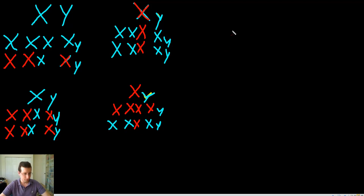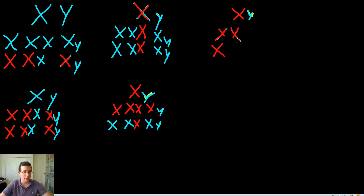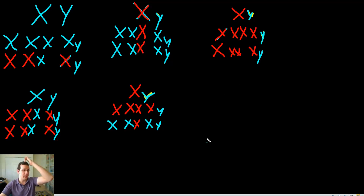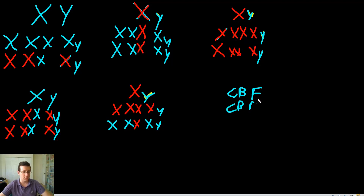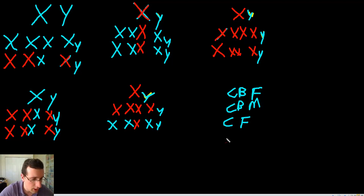For our last cross, we can have a colorblind male and a female that has both of her genes being problematic. This is the worst-case scenario because everybody is donating a problematic gene. So all the children are going to be colorblind no matter what, since the male's children receive a Y that cannot protect them from colorblindness.